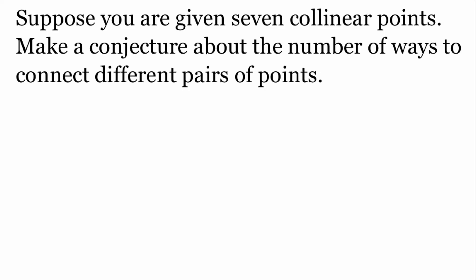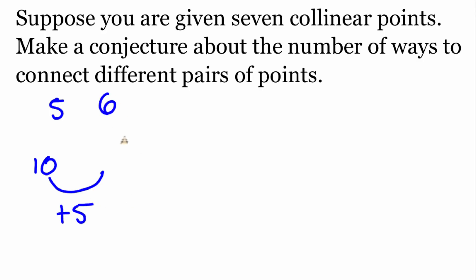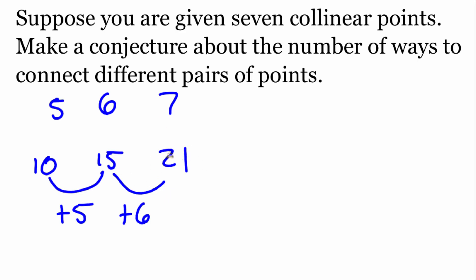Now instead of five collinear points, we've got seven collinear points. Based on our pattern and conjecture, with five points there were 10 connections. Following the pattern, we'd add five to get 15 connections for six points, and then add six to get 21 connections for seven collinear points. So my conjecture is that there are 21 different ways to pair those points.